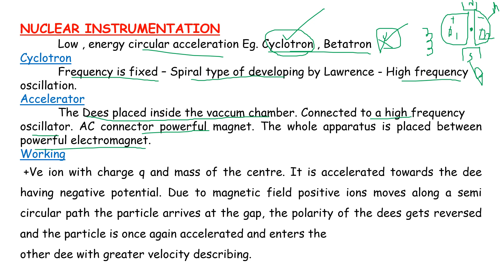A positive ion of charge Q is located at the center. D1 is at positive charge and D2 is at negative charge. When power supply is given, the positive charge is attracted toward the negative charge — that is, the ion is accelerated from D1 toward D2.